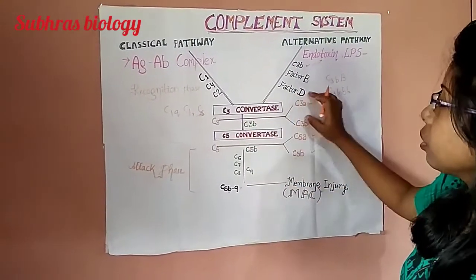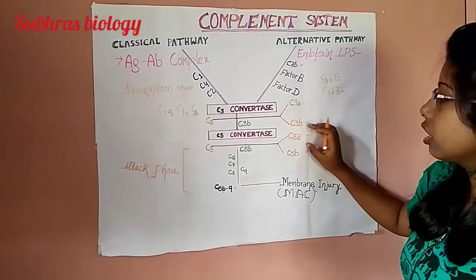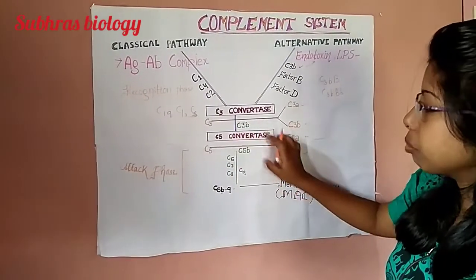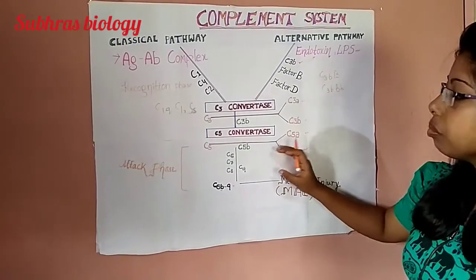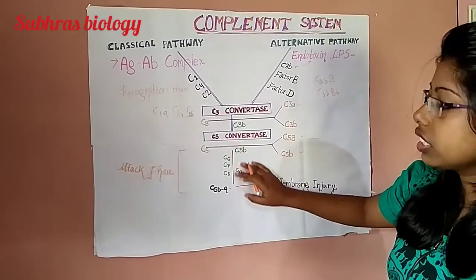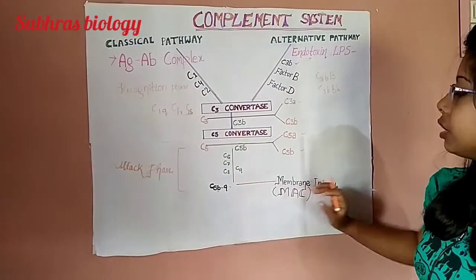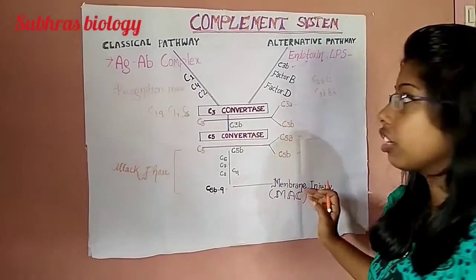C3 is split into C3A and C3B. When C3B is attached, it forms C5 convertase. And C5 is split into C5A and C5B. Next, C6, C7, C8, C9 is activated, by which membrane attack complex forms and immunocytolysis occurs.